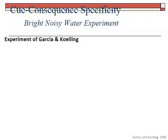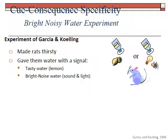Here's the experiment casually called the Bright Noisy Water Experiment — the first experiment that laid out cue-consequence specificity, done by Garcia and Kohling back in 1966. They had some thirsty rats and gave them two kinds of water. One was lemony — a tasty, lemon-flavored water. The other, when the animal licked it, triggered flashing lights and a bell or buzz. So there was tasty water and bright noisy water — the water was the same, it's just that one tasted like lemon and the other had lights and sound that went off when the animal was licking.